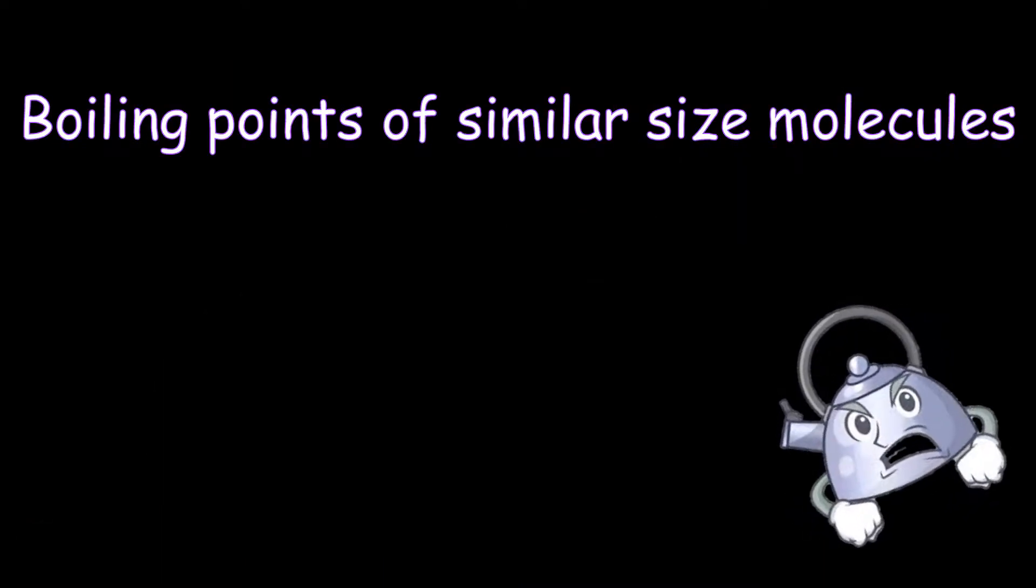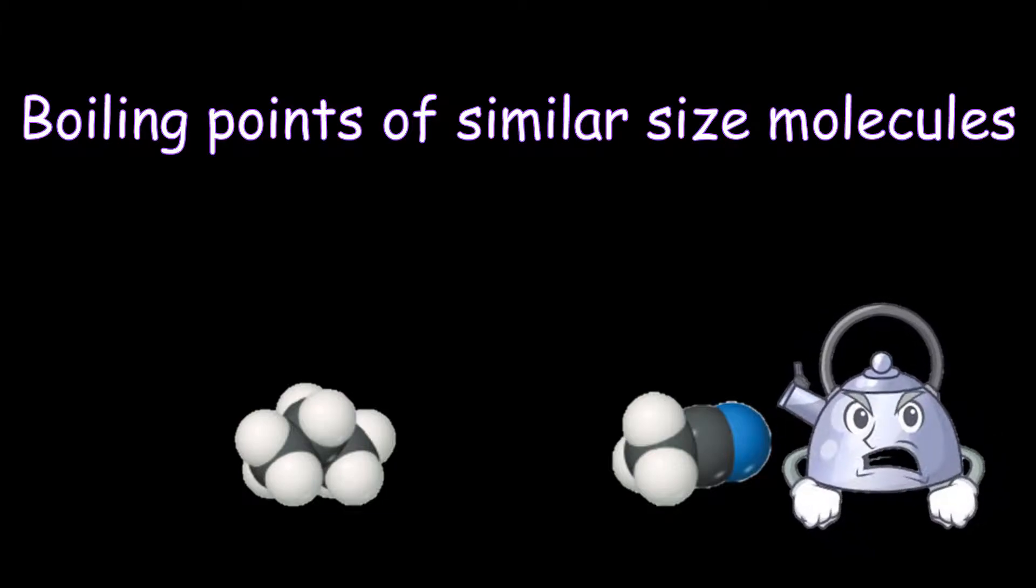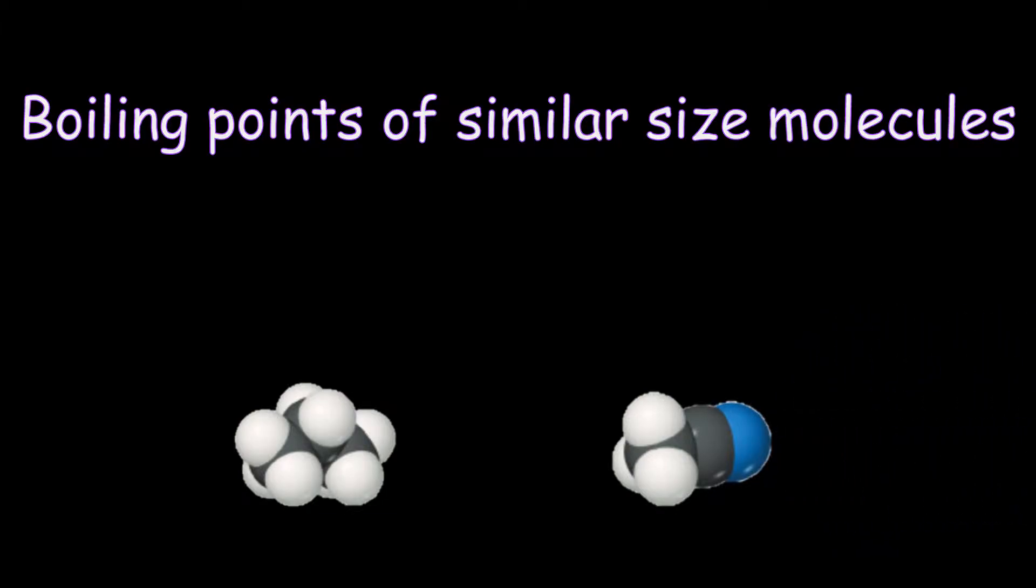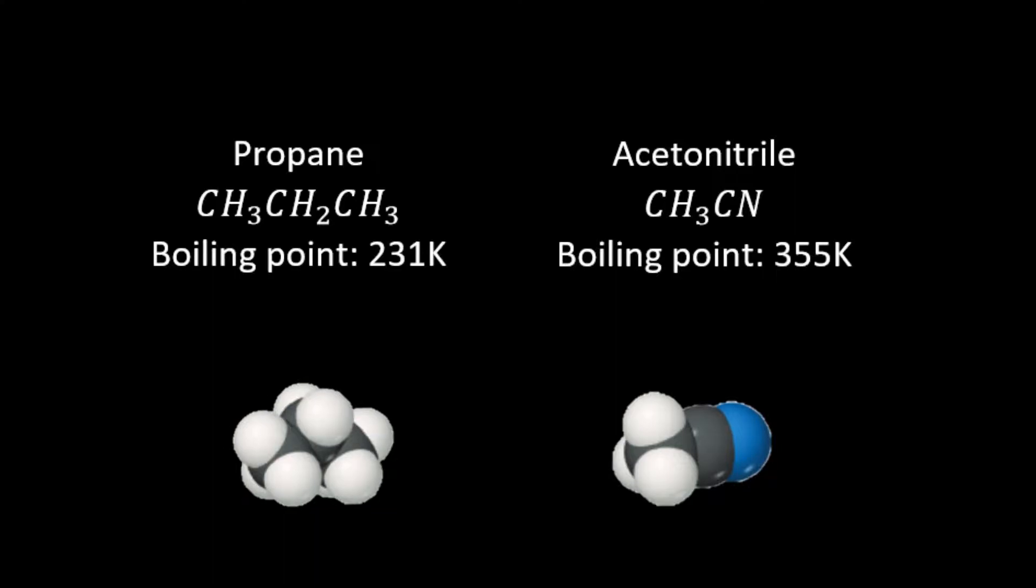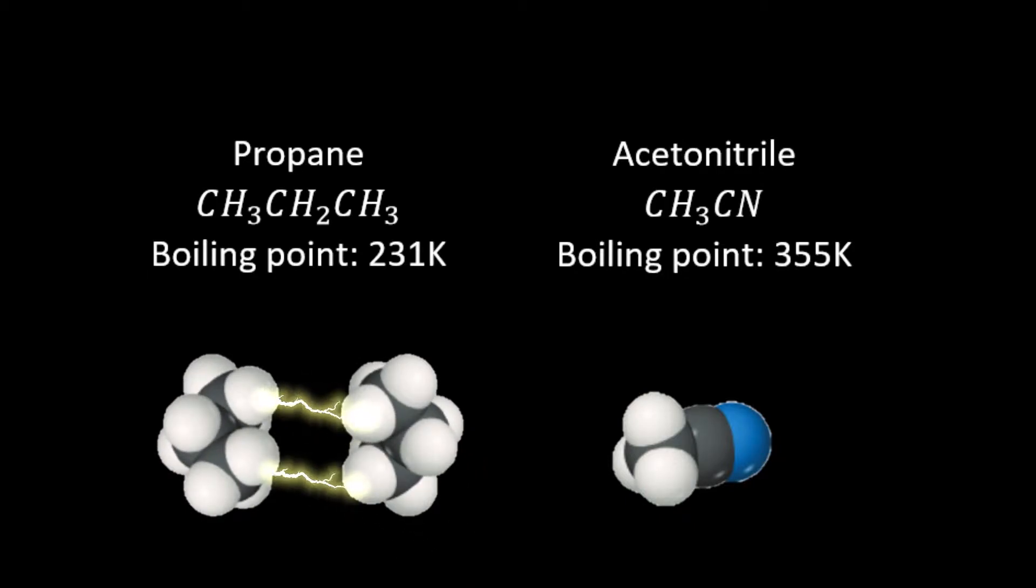Dipole-dipole interactions have a strong effect on boiling points. Here we have two molecules with very similar molecular weights. However, propane is a non-polar molecule, and therefore only has dispersion forces as the attraction between them. Hence its very low boiling point of 231 Kelvin, or minus 42 degrees Celsius.